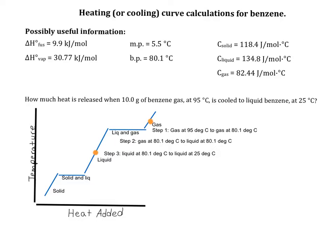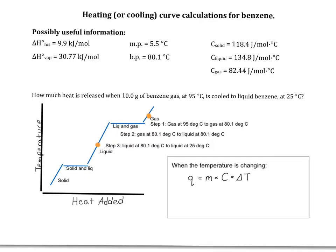We'll use two different equations for this type of calculation. One when the temperature is changing, and one when it's not changing. When the temperature is changing, we'll use the specific heat calculation: Q equals M times C times delta T. Q is the energy released when a certain mass of a substance with a certain specific heat undergoes a certain temperature change.